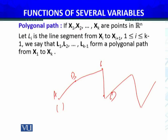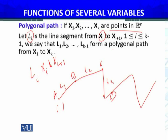If x1, x2, ..., xk are points in RN, and Li is the line segment from xi to x(i+1), then L1, L2, ..., L(k-1) form a polygonal path from x1 to xk. So the points a, b, c, d, e that I named earlier correspond to x1, x2, x3, x4, x5 in this mathematical formulation.